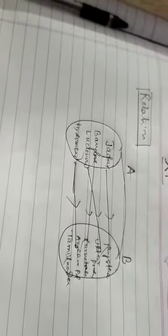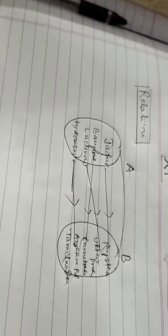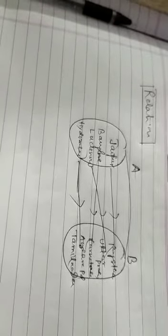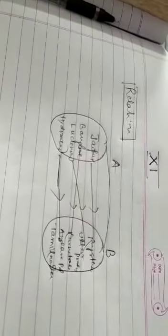No, no. This is the capital of the state. Jaipur is the capital of Rajasthan. Bangalore is the capital of Karnataka. So in set A, the name of capital. And in B, the name of state. The rule is capital is associated with state.